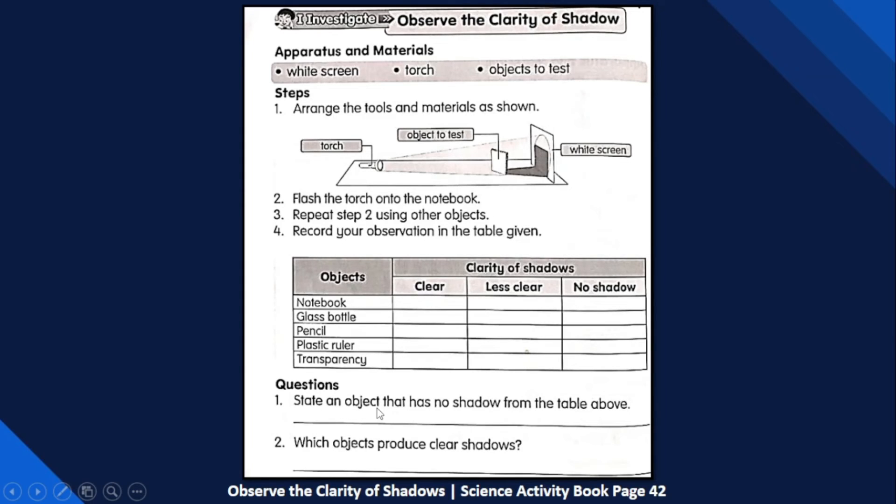Question 1: State an object that has no shadow from the table above. Remember, the object without any shadow? It is the transparency, so you write down transparency only. Is it plastic ruler also? No, it's just less clear.